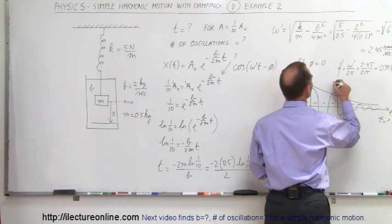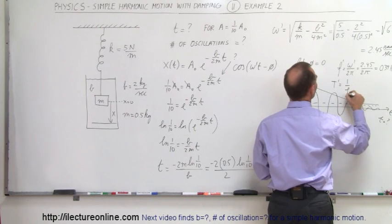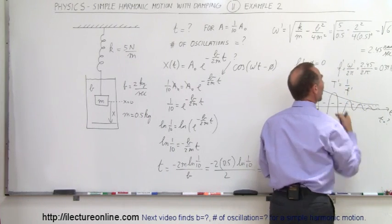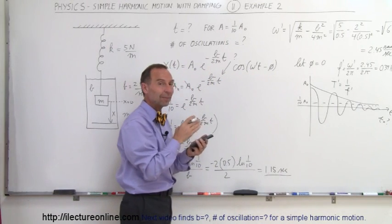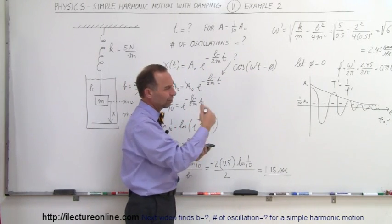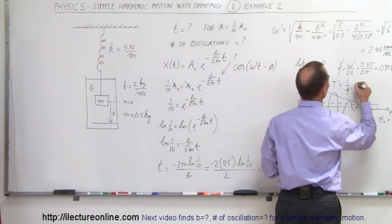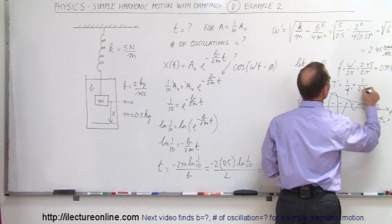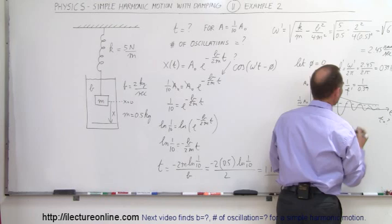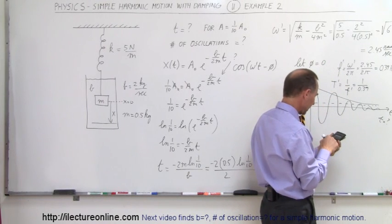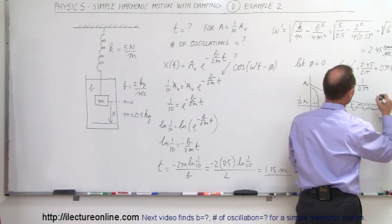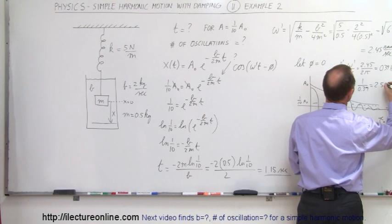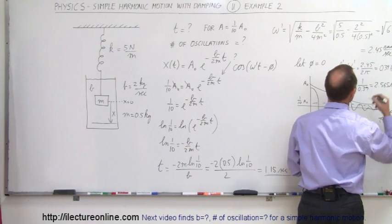That means the period is equal to 1 over f prime. Now notice I put all these primes on there. The primes simply indicate that I'm dealing with a damped system. I'm not dealing with an undamped system, so I just use prime for damped systems. So this is 1 over 0.39. That would be the period. And so if I take the inverse of that, the period is 2.565 seconds, 2.565 seconds for the period.